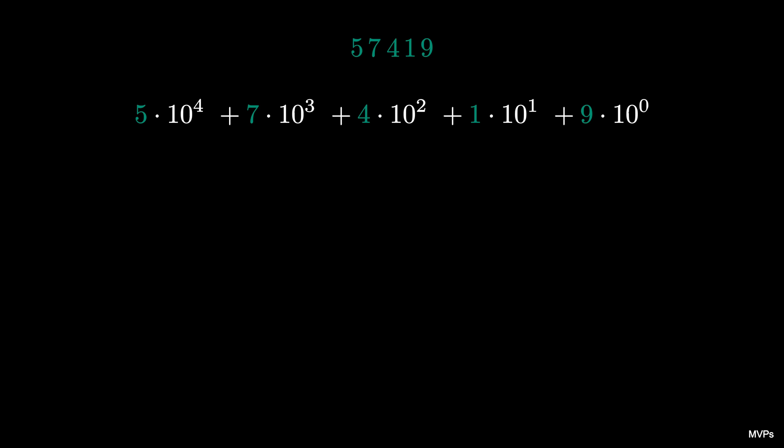The 4 represents 4 hundreds, the 1 represents 1 ten, and the 9 represents 9 times 10 to the 0, or 9 ones. So the number is 57419.